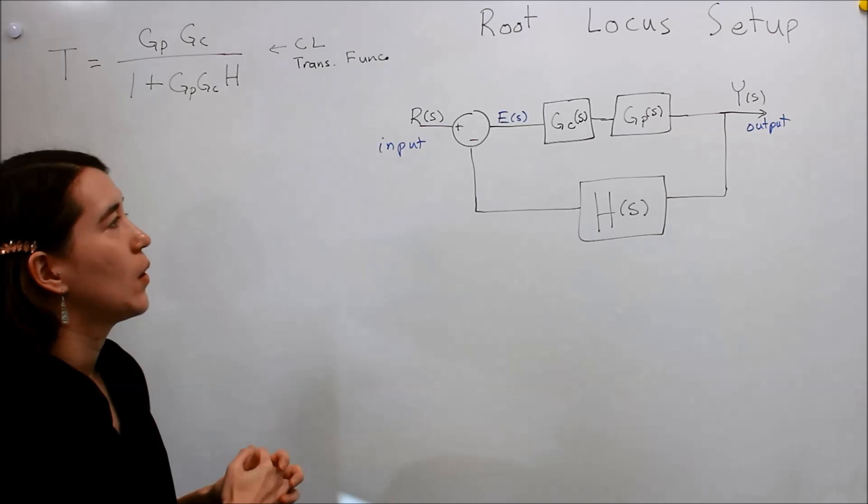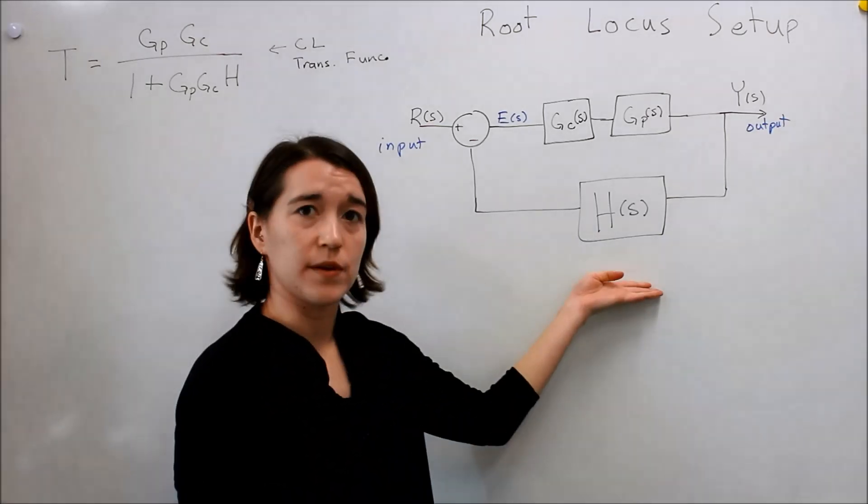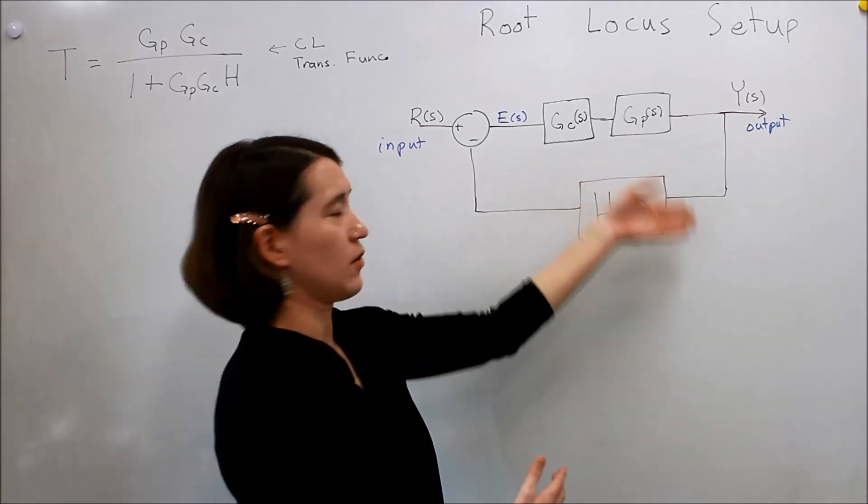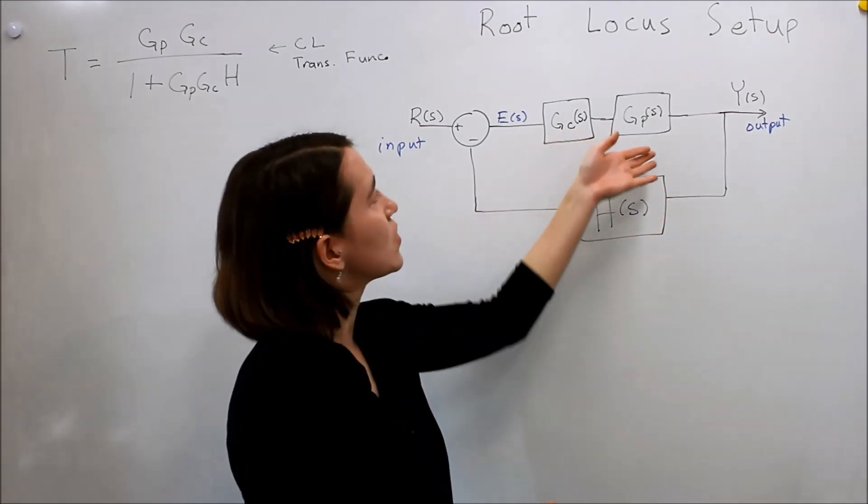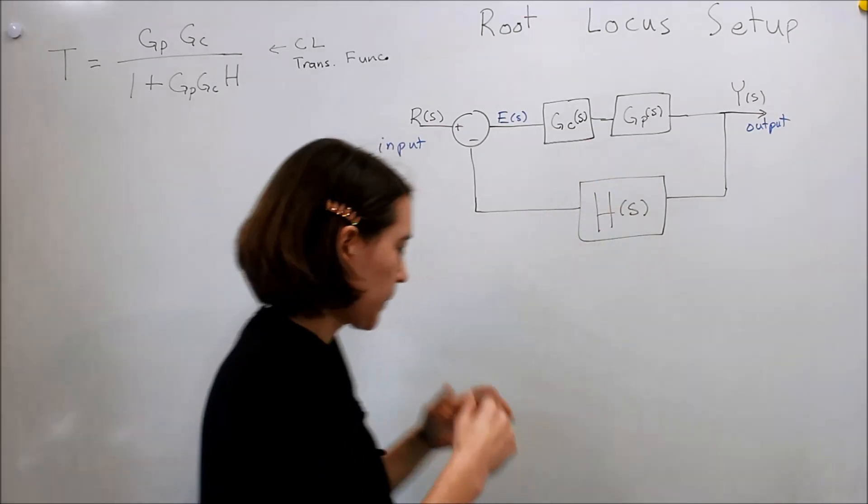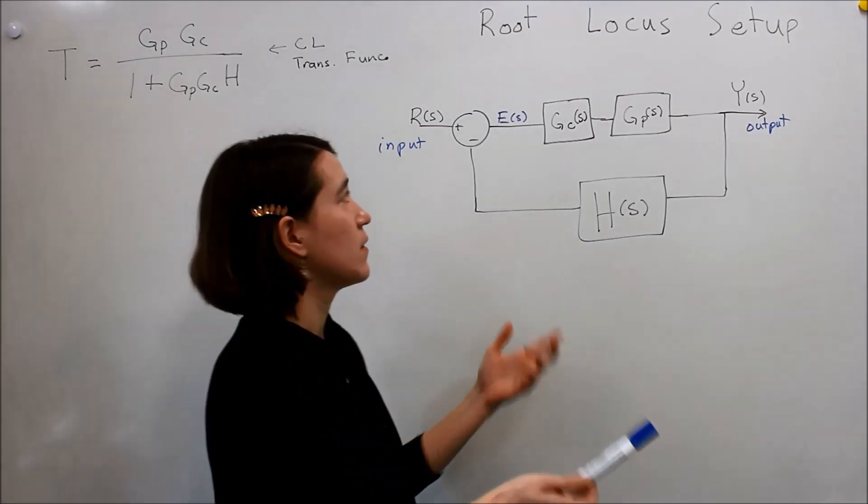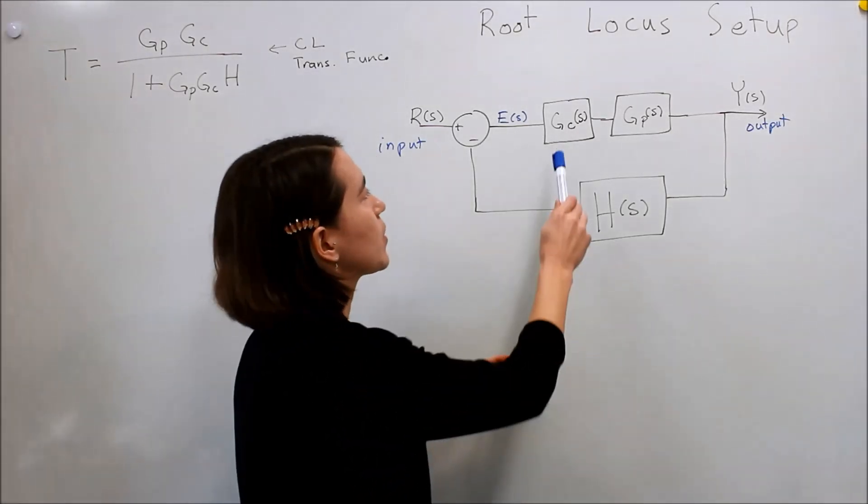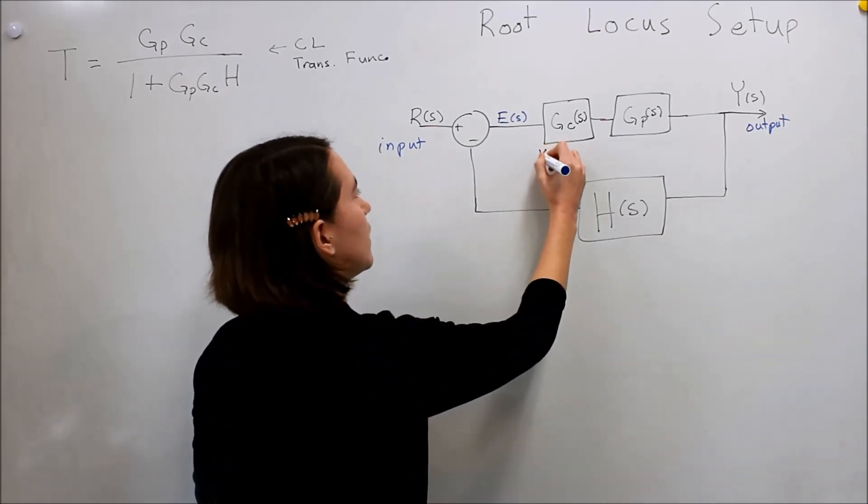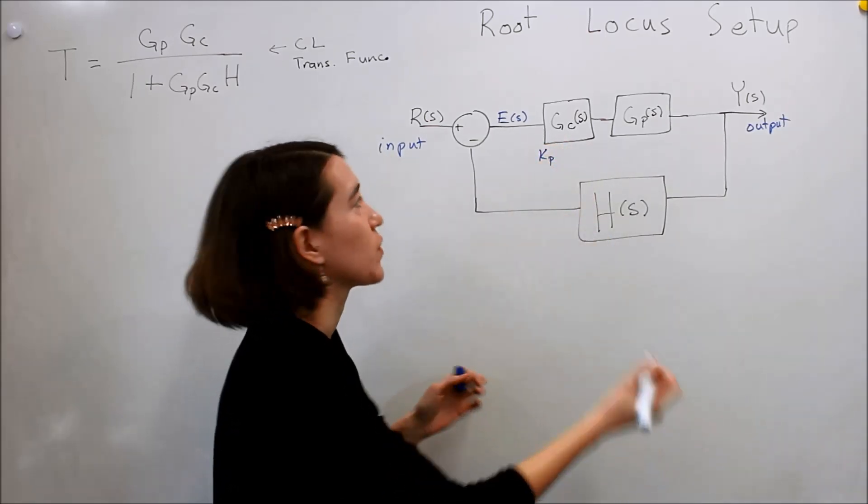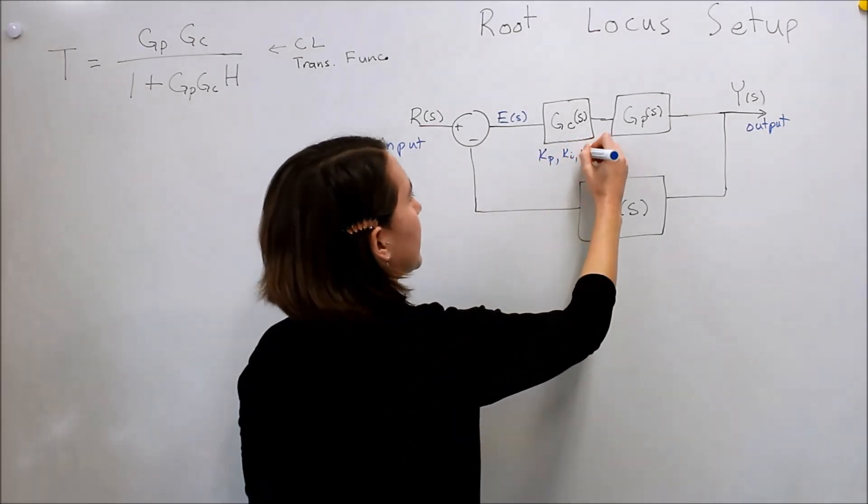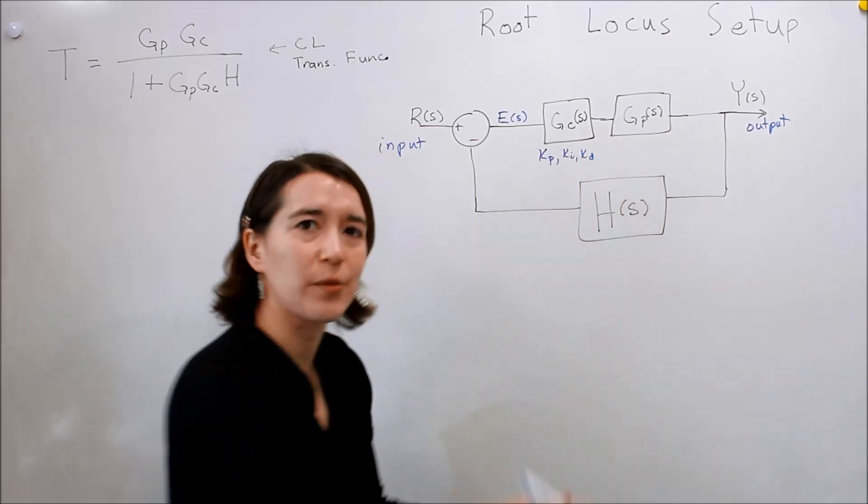So first of all, we have this closed loop system, so we're considering the sensor feedback, and so the transfer function for that H, and then we have the control and then we have our plant. Well usually when we actually apply a control, there's some sort of variable. And we've been calling it K, before it's either been Kp if you have proportional control, or you might have Ki for integral control, or Kd, or really you can call whatever variable you want.